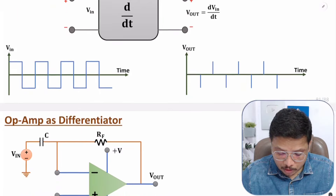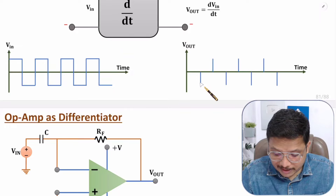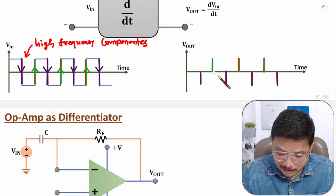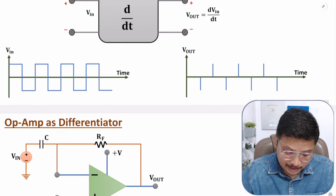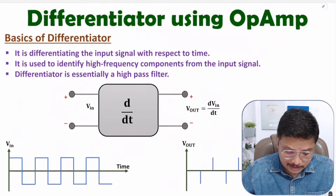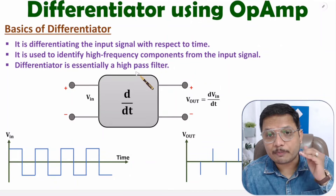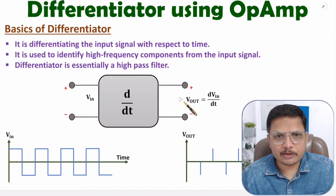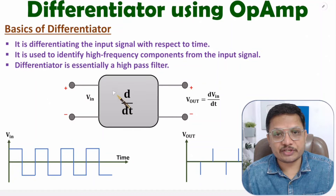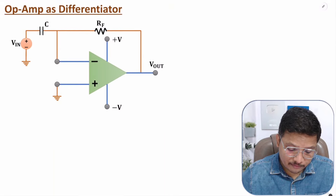If you observe the output of this signal, when a falling edge is there, the output is having negative spikes, and when a rising edge is there, the output is having positive spikes. So one can say the differentiator circuit is used to identify high frequency components. Differentiator is essentially a high pass filter, which allows high frequency to pass through it. At the output side you will be having high frequency components only; low frequency components at the input are blocked by this differentiator circuit.